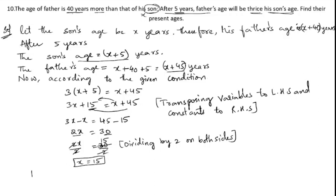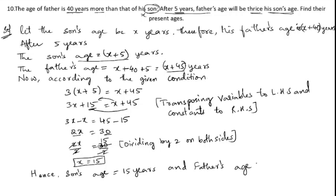Hence, the son's age is 15 years. The father's age is x plus 40, so substituting x equals 15: 15 plus 40 equals 55. Therefore, the father's age is 55 years.